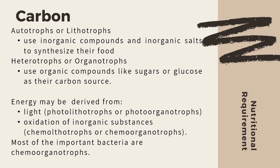The second classification would be heterotrophs or organotrophs. Autotrophic bacteria are those that use inorganic compounds or inorganic salts in order to synthesize their food. Their source of energy may be derived from light, and so they could be called photolithotrophs. Or, their source of energy may be derived from oxidation of inorganic substances, and as such, they are referred to as chemolithotrophs. Heterotrophic bacteria use organic compounds like sugars or glucose as their carbon source. Their source of energy may be derived from light, and as such, they are called photoorganotrophs. But if their energy source is through oxidation of inorganic substances, then we call them chemoorganotrophs.